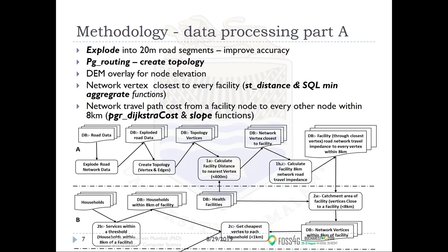We had to prepare the data by segmenting road edges to about 20 meters, ensuring that if a segment is 100 kilometers long, the next node won't be 100 kilometers away. We also wanted to incorporate elevation, so for each node we overlaid it with a DEM to get the elevation. The algorithm then identifies the vertices on the road network closest to a facility, using PostGIS functions ST_Distance and aggregate functions in SQL.